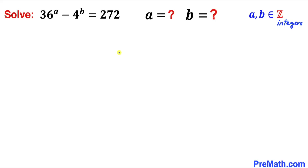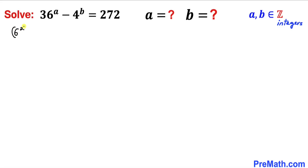Let's get started with the solution. The first thing we are going to do: 36 could be written as 6 power 2, and likewise 4 could be written as 2 squared. So therefore this equation could be written as (6²)^a minus (2²)^b equals 272.